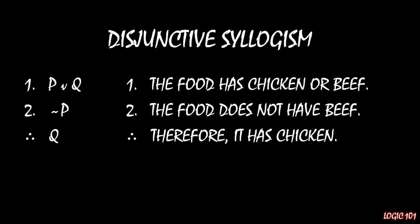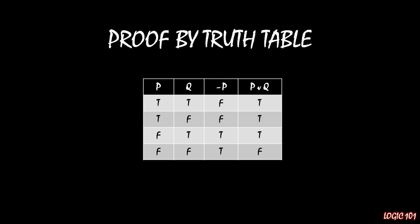We can prove this is true logically, both using a truth table and by relying on modus ponens. Starting with the truth table: we have four columns — two simple sentences P and Q, and our two premises, not P and P or Q. P or Q is true in the first three rows. Not P is true in the bottom two rows. These overlap in just the third row, and in that row Q is in fact true — which is exactly what disjunctive syllogism told us.